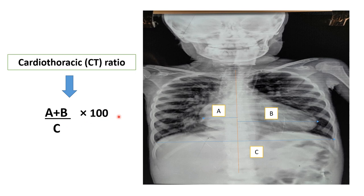When this ratio is more than 50%, we label it as cardiomegaly after one year of age. In infants, more than 60% CT ratio is considered cardiomegaly. We also remember that sometimes there is no cardiomegaly but the contour of the heart is changed. Ideally, when drawing the midline, one-third of the heart should be on the right side and two-thirds on the left side. Whenever this proportion is disturbed, it may be due to rotation or heart disease.